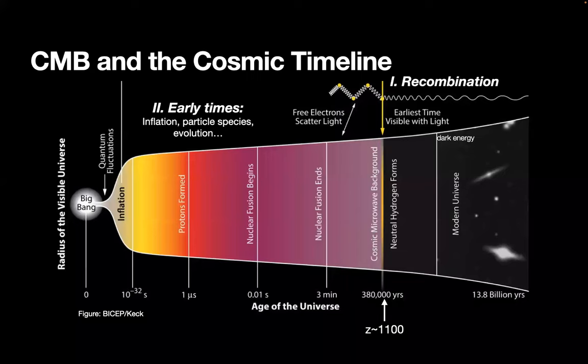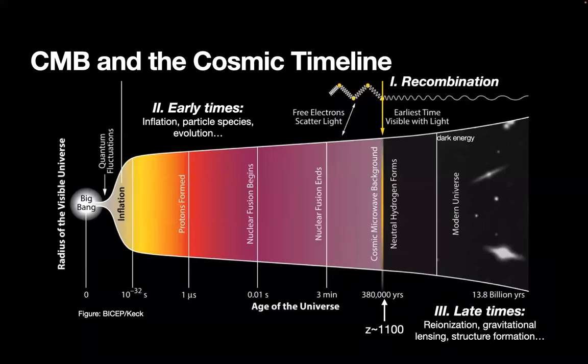CMB photons interact very weakly as they travel towards us, but they do interact a little bit. From scattering off ionized gas and their interaction via gravitational lensing with large-scale structure in the late-time universe, we can also learn about the physics of the modern universe. So the point is you can learn about all phases of the universe with precision measurements of the CMB.